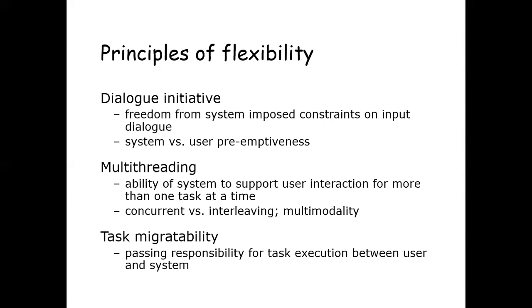Flexibility refers to the multiplicity of ways in which the end-user and the system exchange information. One principle affecting flexibility is dialogue initiative. During an interaction viewed as a dialogue between partners, it is important to consider which partner has initiative. The system can initiate the dialogue — called system preemptive — where the user simply responds to requests. Alternatively, the user may be entirely free to initiate any action, called user preemptive. Generally, the user's ability to preempt the system is maximized while the system's ability to preempt the user is minimized.